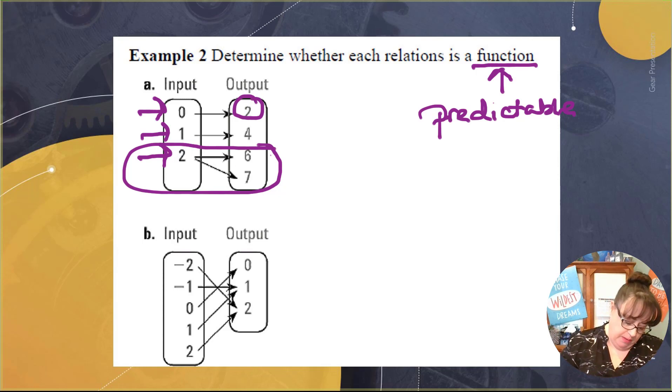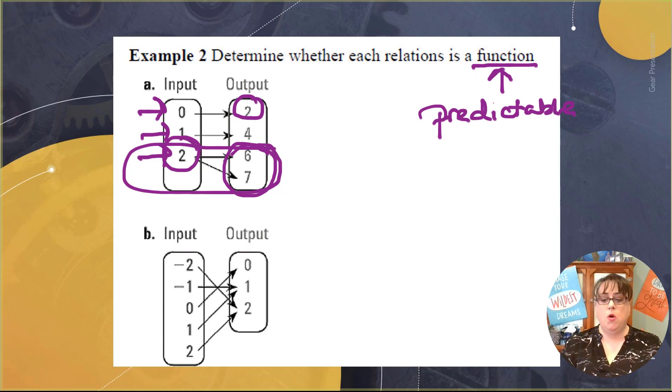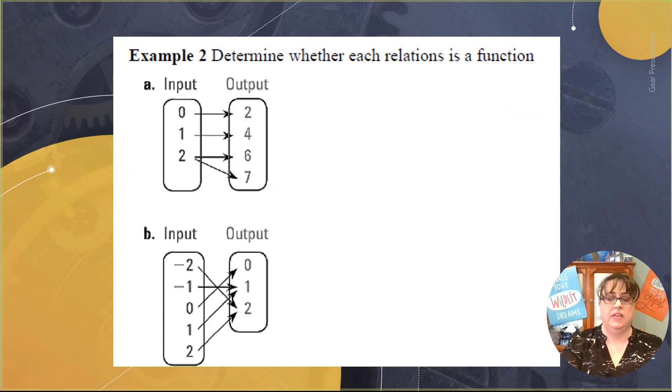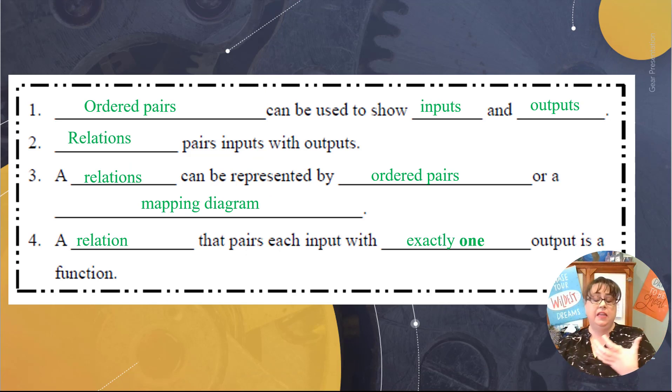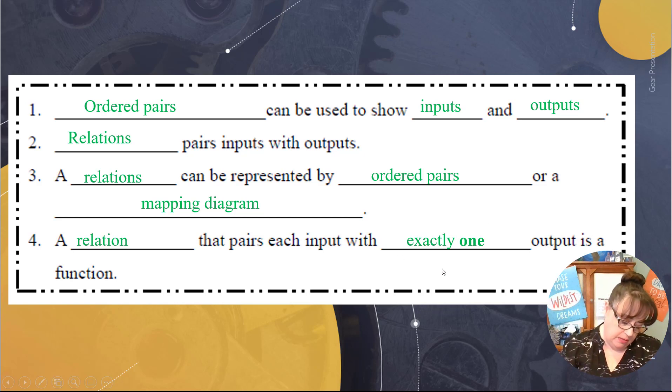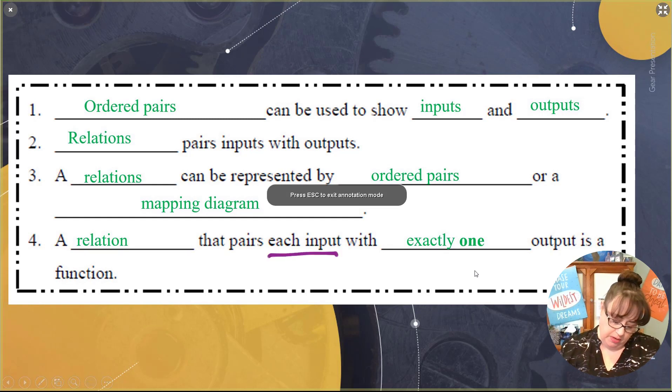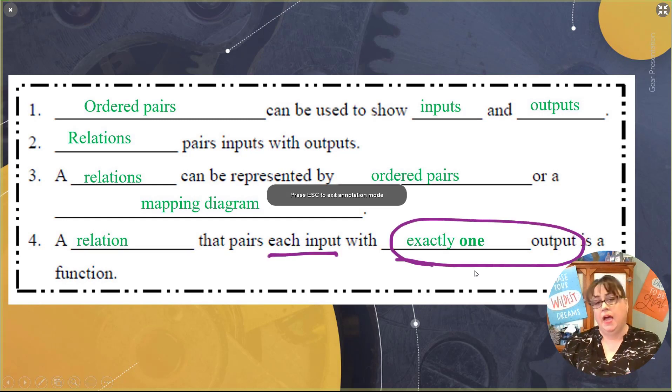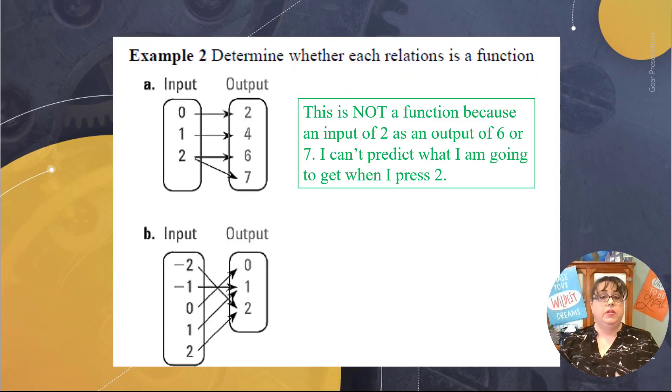In other words, for every input, this gave me two outputs. If we go back to our definition of what a function is, it said every input has exactly one output. This did not have exactly one output. I had two outputs. So that is not going to be a function. This is not a function because an input of 2 has an output of 6 or 7 and I can't predict what I'm going to get when I press 2.